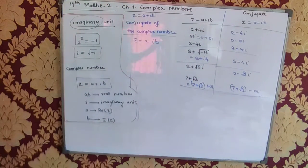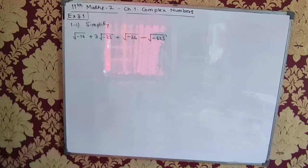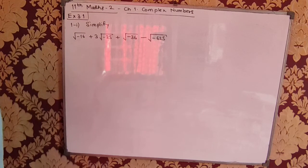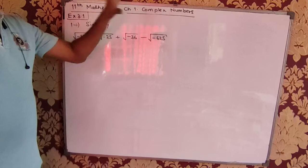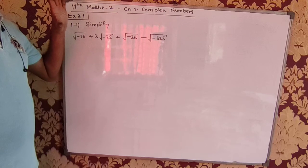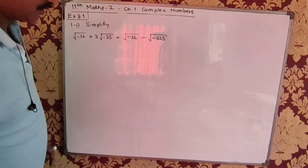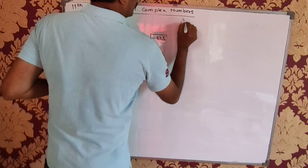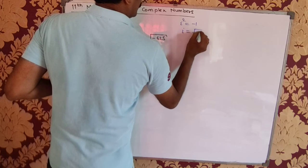Any doubts about this? We will start with exercise 3.1 now. This exercise deals with addition, subtraction, multiplication, and division of complex numbers. The first question talks about simplification. We know that i² = −1 and i = √(−1), and we have to make use of this formula.